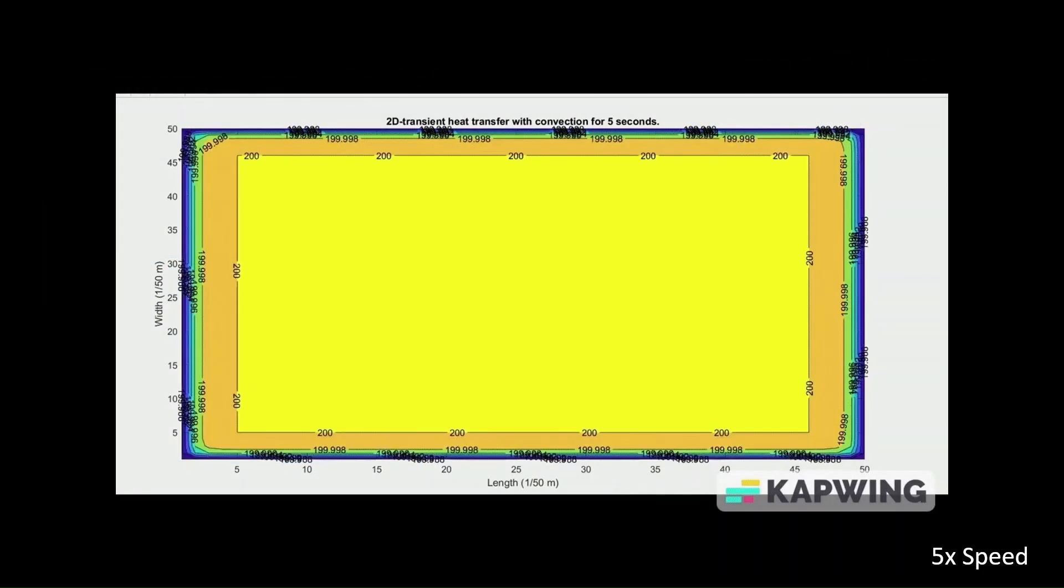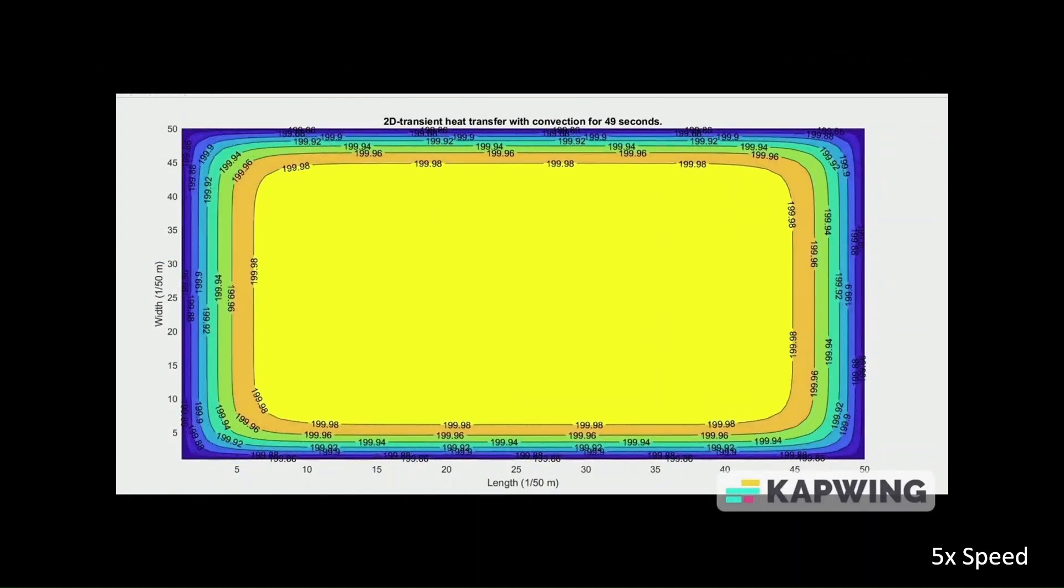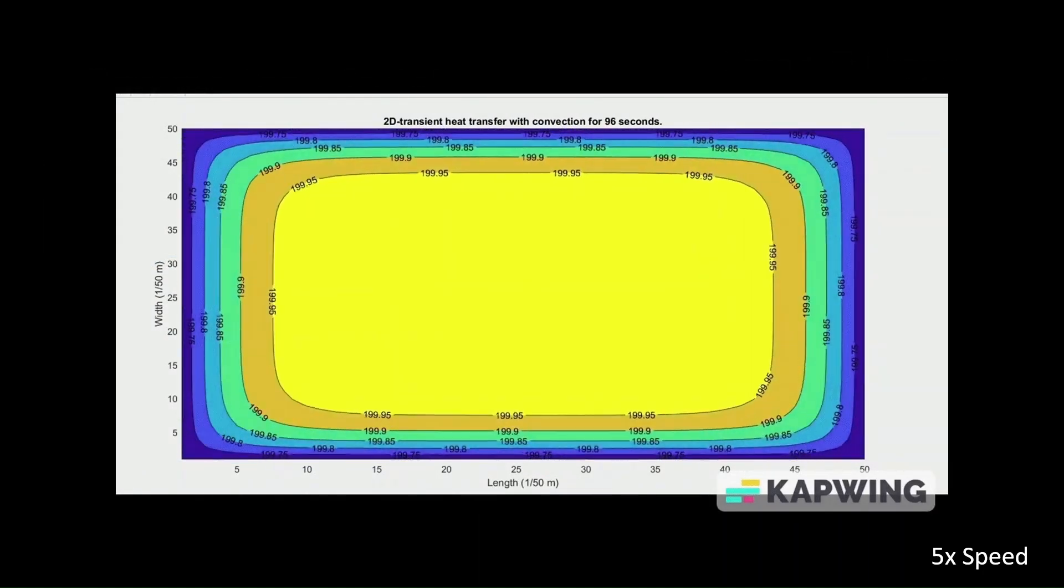The animation is nearly identical to that made with the conduction boundary conditions. The temperature profiles for copper, plastic, and diamond are shown after 100 seconds. A nearly identical conclusion can be made for the convective heat transfer simulation. After the time period, diamond has the lowest internal temperature and a more even temperature distribution, as opposed to the copper and plastic, due to its high thermal conductivity.